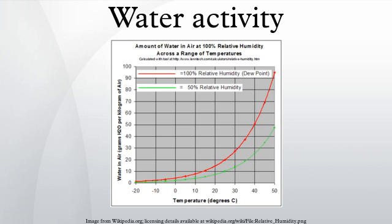Capacitance hygrometers consist of two charged plates separated by a polymer membrane dielectric. As the membrane absorbs water, its ability to hold a charge increases and the capacitance is measured. This value is roughly proportional to the water activity as determined by a sensor-specific calibration. Capacitance hygrometers are not affected by most volatile chemicals and can be much smaller than other alternative sensors. They do not require cleaning, but are less accurate than dewpoint hygrometers.